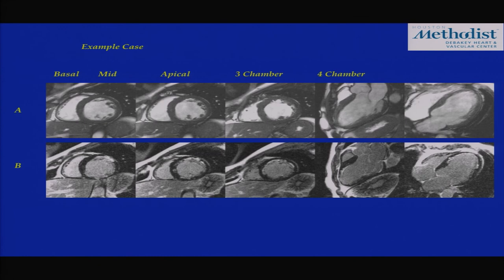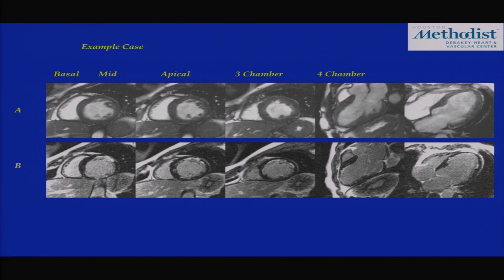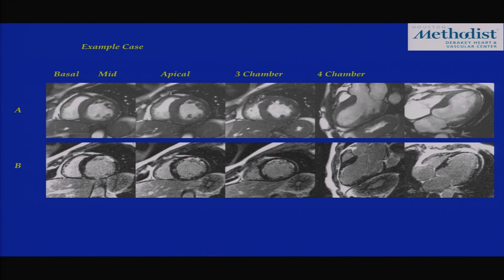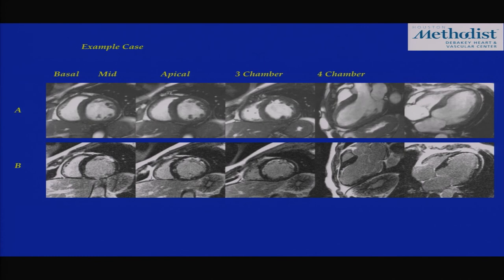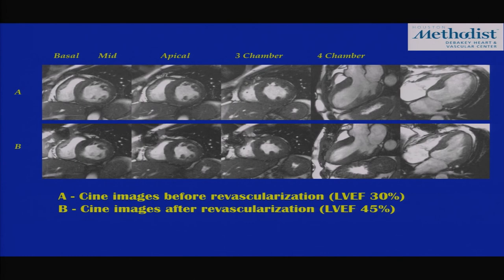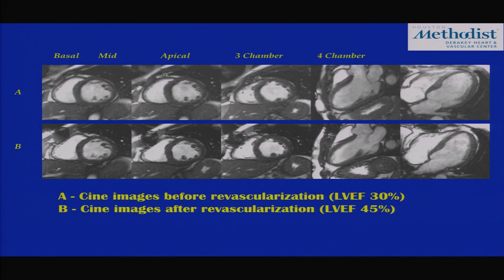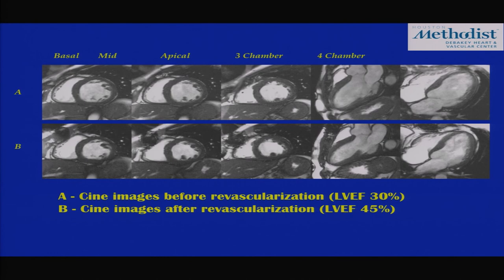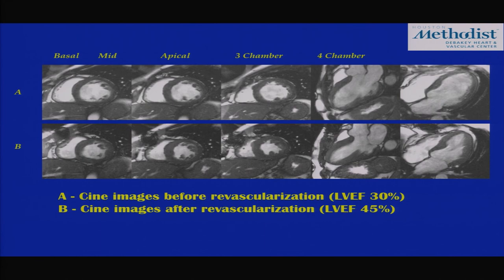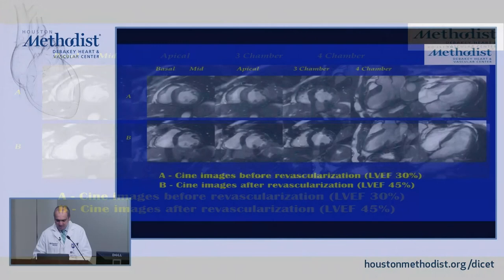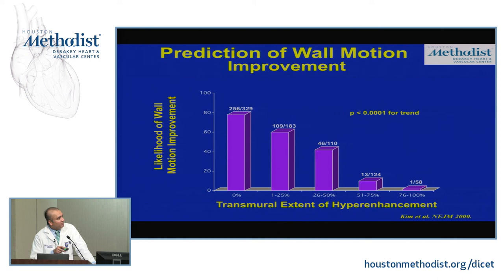Delayed enhancement MRI in that case found significant infarction along the anterior wall — probably more than 75% of wall thickness — while the septum and lateral wall appeared black showing no infarction. The inferior wall showed infarction in approximately the 50% range. After revascularization, overall ejection fraction improved from 30% to 45%. The septal and lateral walls — where no hyper-enhancement was seen — showed the greatest improvement, while the anterior and inferior walls with hyper-enhancement showed less improvement.